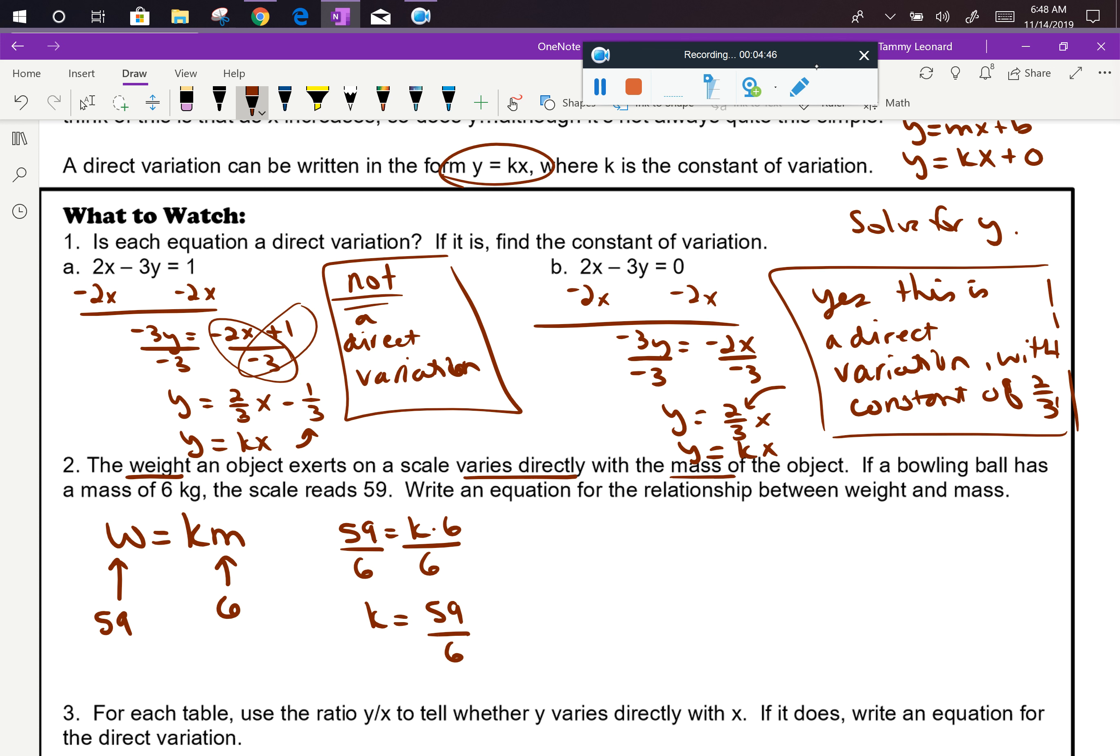So when it asks us to write an equation for the relationship between mass and weight, it's going to take the form of this original equation we wrote, but it's going to use this constant of variation. So the equation that models the relationship is w equals 59 sixths m. That's the answer to the problem.